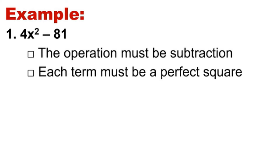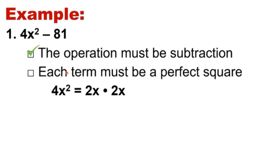Number one: 4x squared minus 81. Let's check — is the operation really a subtraction? Yes, so the minus sign is in the middle, meaning we satisfy the first requirement. Second, each term must be a perfect square. Our terms are 4x squared and 81. Is 4x squared a perfect square? Yes — when we say perfect square, the factors of the given term must be the same, and 2x times 2x gives 4x squared.